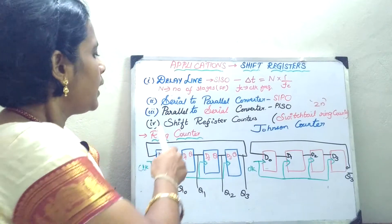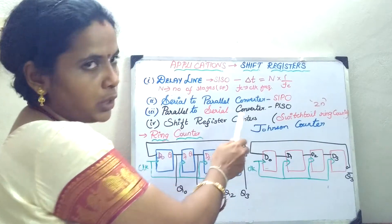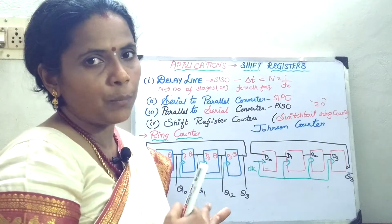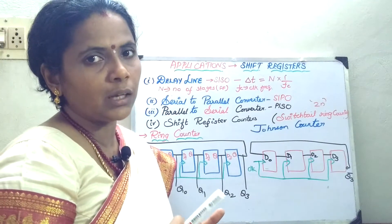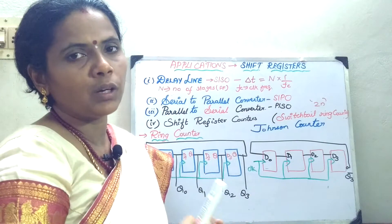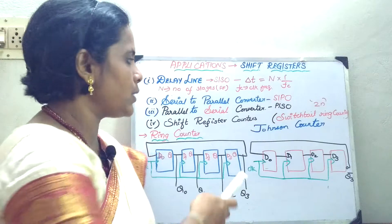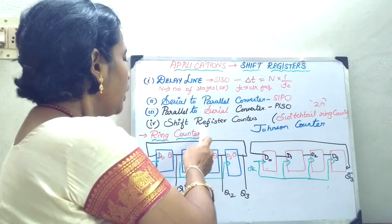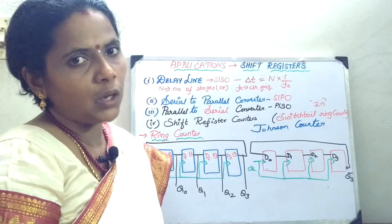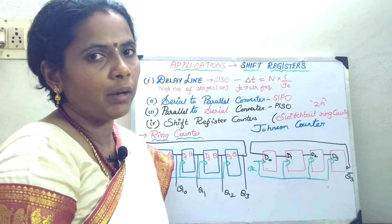The next thing is you can also use shift registers as shift register counters. When I say shift register counter, suppose in a computer the data has to be circulated for some 4 clock pulses or 8 clock pulses — in that case you can go for the ring counter or the Johnson counter. First we will see the working of the ring counter.